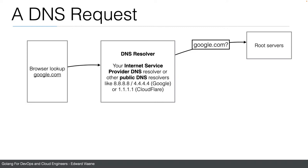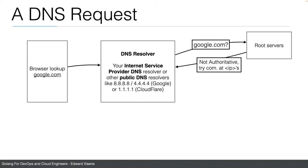The root server will say: I don't know anything about google.com, I am not authoritative for that. Try .com at these IP addresses. So the root server knows where to find servers for the top-level domains, and it will reply with the host names and IP addresses of those servers. Our DNS resolver then knows it can go to specific servers for .com domain names, and that is what it will do.